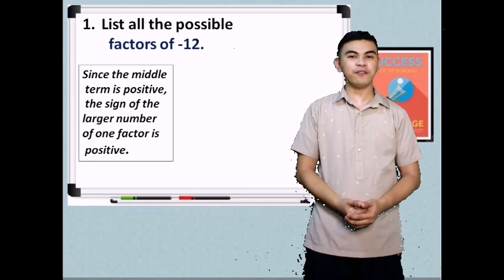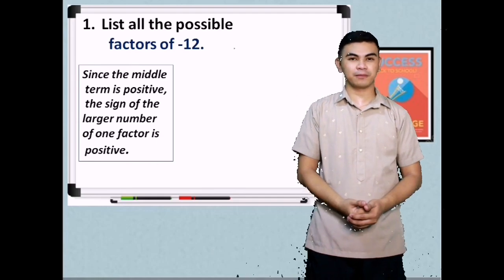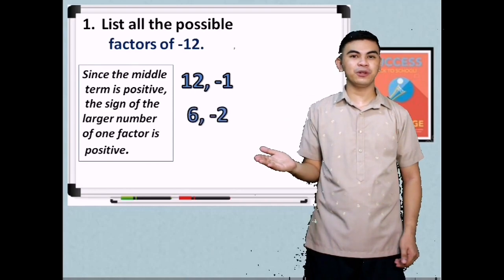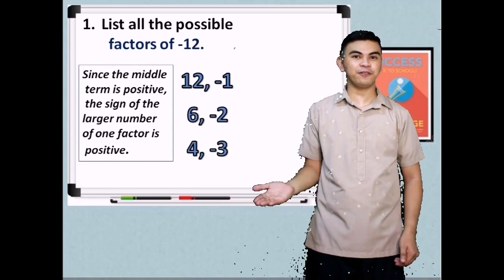Now, what are the factors of negative 12? We have 12 and negative 1, 6 and negative 2, 4 and negative 3.